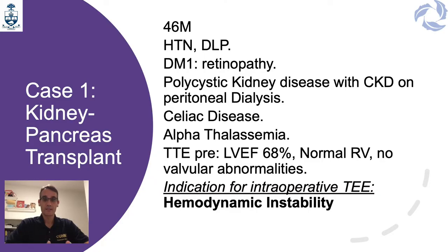The first case we are presenting is a kidney-pancreas transplant on a 46-year-old male with a past medical history significant for hypertension, dyslipidemia, polycystic kidney disease with chronic kidney disease on peritoneal dialysis, history of celiac disease, and alpha-thalassemia. The pre-op transthoracic echocardiography showed a normal left ventricle, normal right ventricle, and no valvular abnormalities. The indication for transesophageal echo was hemodynamic instability once the transplant started.